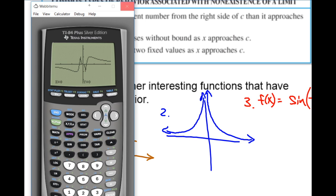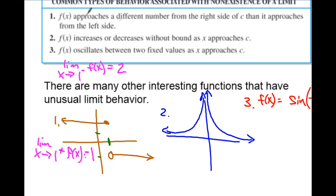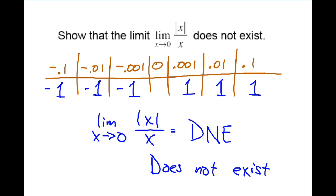We can't predict it's going to a specific number, so therefore the limit does not exist on that example. Here's another example—this time we're doing it numerically as opposed to the graphic examples. The limit of |x|/x as x approaches zero does not exist.